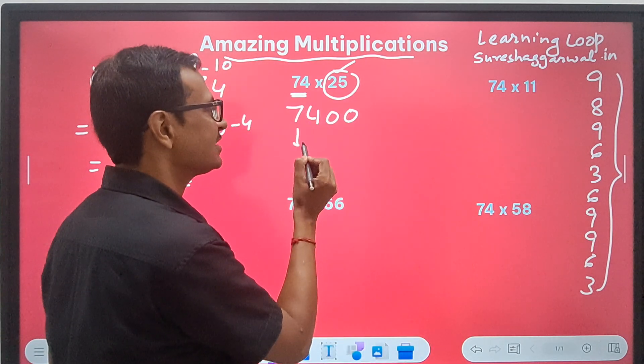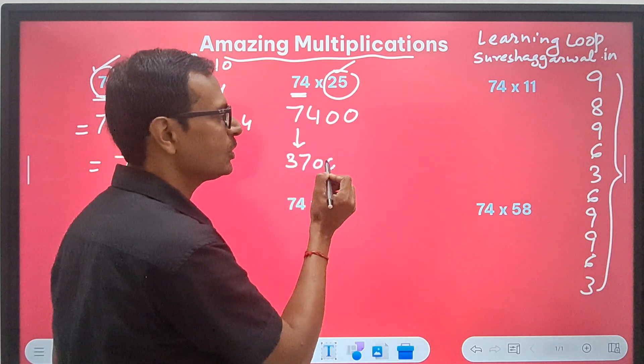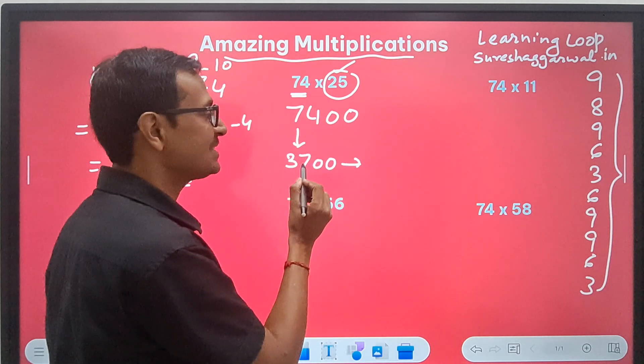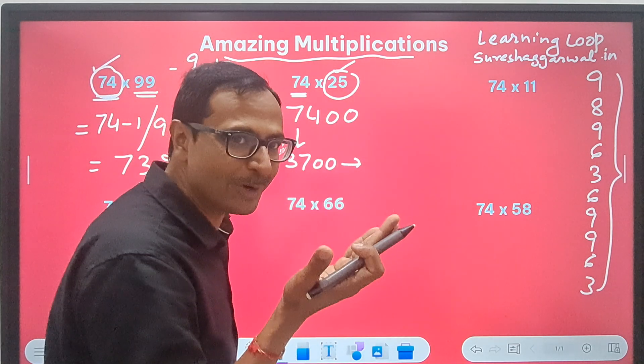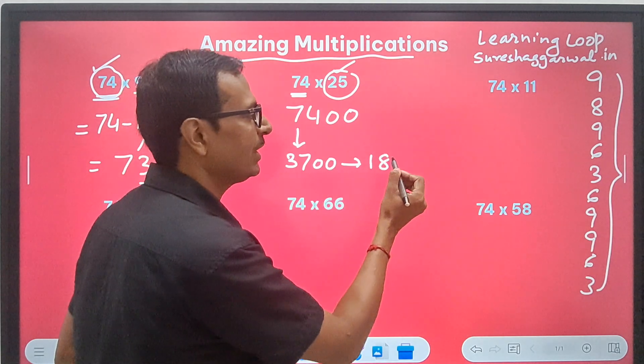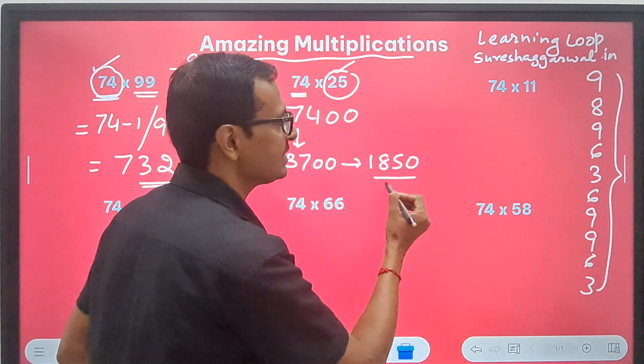Just take half of this number. 7400 divided by two gives 3700, and another time half 37. The half is 18.5, right? Times 100 gives you 1850 as the answer.